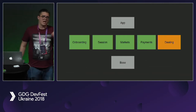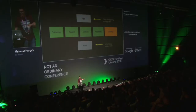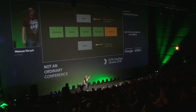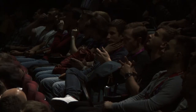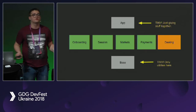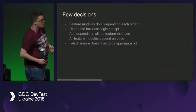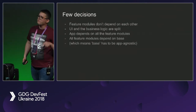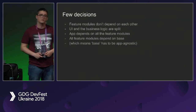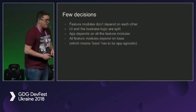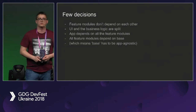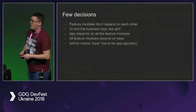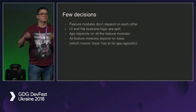On top of it we have the app module, and at the bottom we have a base module. The app module is just a tiny piece gluing stuff together, and the base module only contains utilities — no business logic — only utilities shared across different feature modules. A few key decisions we made at the beginning and follow to this day: feature modules don't depend on each other.